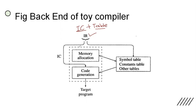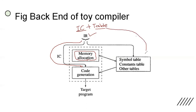The IC is used by the code generation step only. Memory allocation is not at all concerned with the IC. The symbol table, constant table, and other tables are used by memory allocation as well as code generation. So how memory allocation is done and how code generation is done, that we are going to see in this lecture.